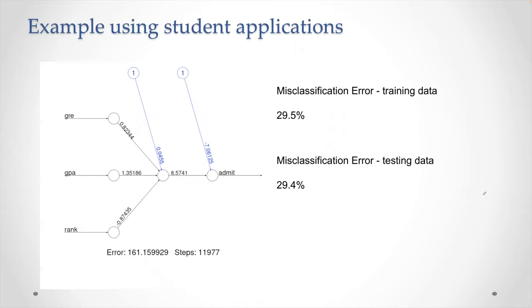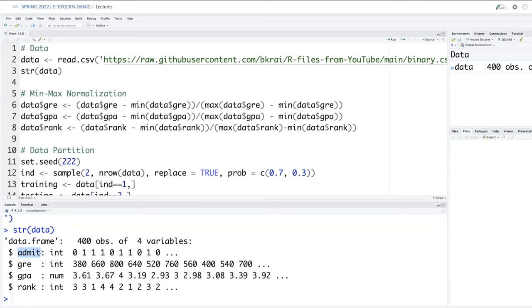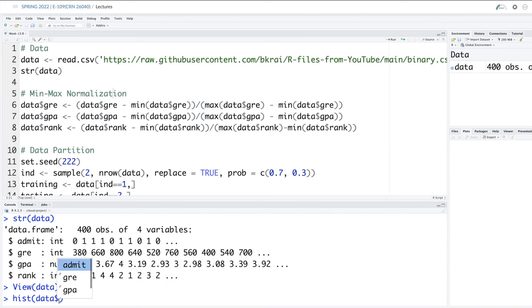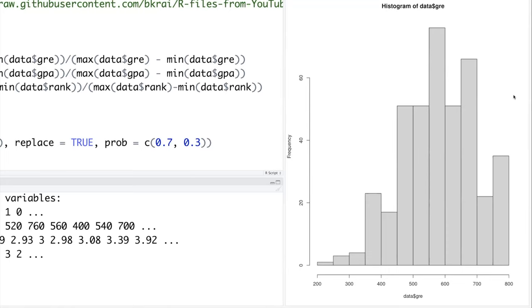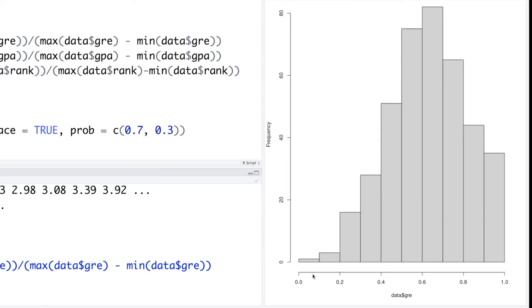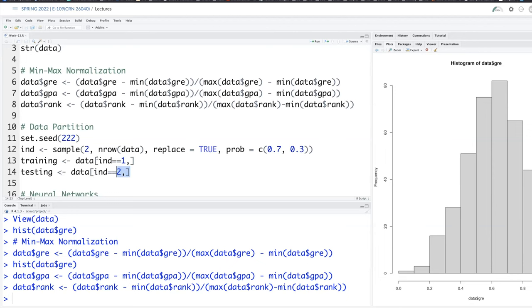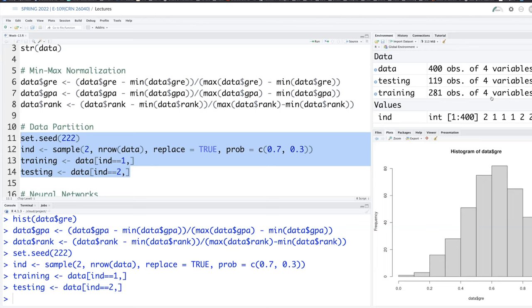So let's look at one example of using a small neural network. Because to understand a deep neural network, we have to understand how a small one works. This is the data frame with 400 observations and four variables. And the variable of interest is admit, which only takes two values, zero and one. And other three variables are independent variables. Histogram of data dollar GRE. You can see GRE values range from 200 to about 800. And then once you do minimax normalization, and again check using histogram. It retains the pattern and everything. The only thing is now the values are between zero and one. And then our typical data partitioning, I'm doing 70, 30. 70% goes to training and 30% goes to testing. Training has 281 observations. Testing has 119.